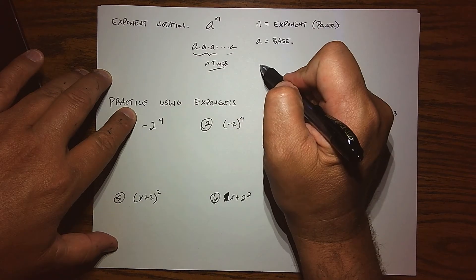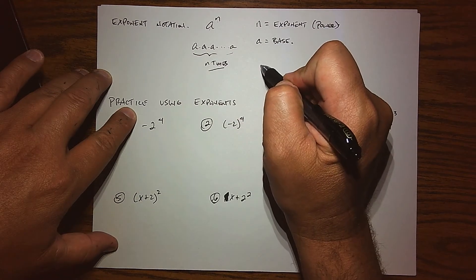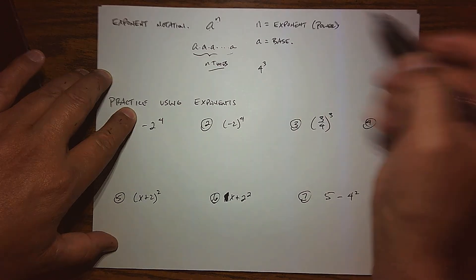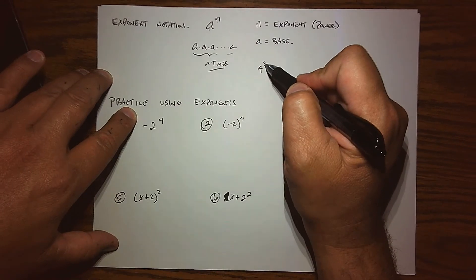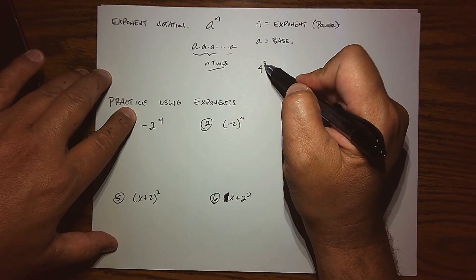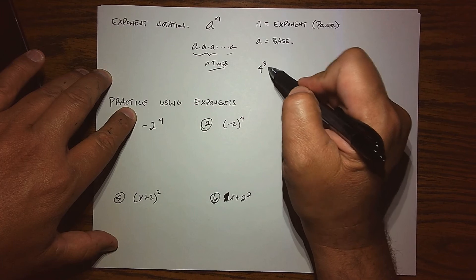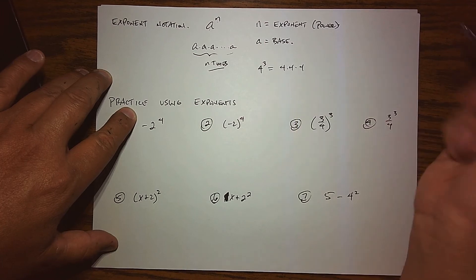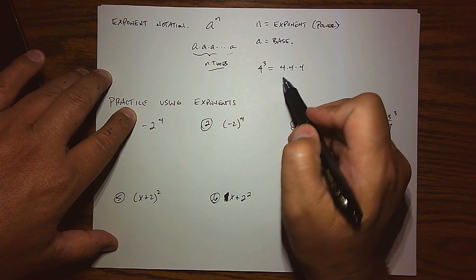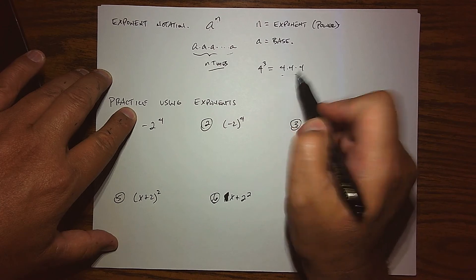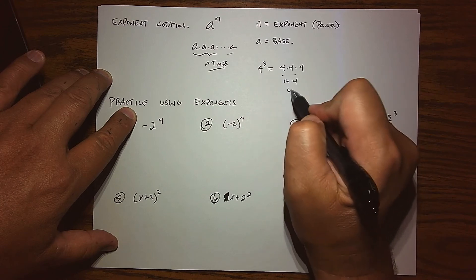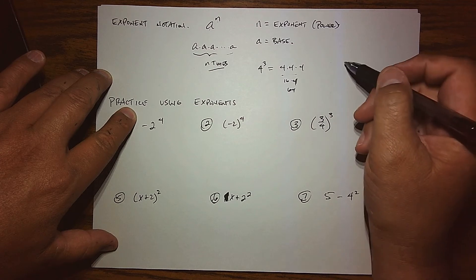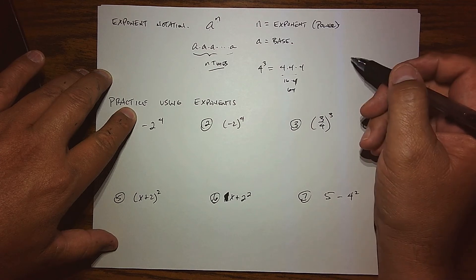Looking at a quick example: when we have 4 to the third power, the base is 4 and the exponent is 3. That exponent tells me to multiply 4 by itself 3 times. Moving left to right, that's 4 times 4 times 4, which is 16 times 4, giving us 64. And that's pretty much how it works.